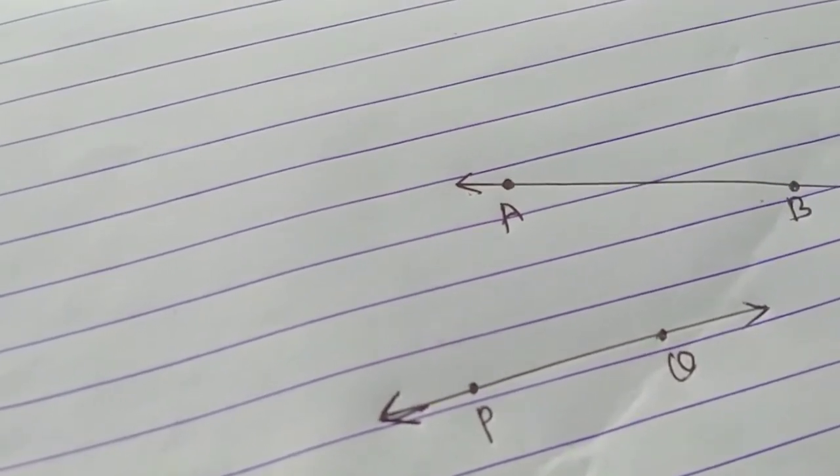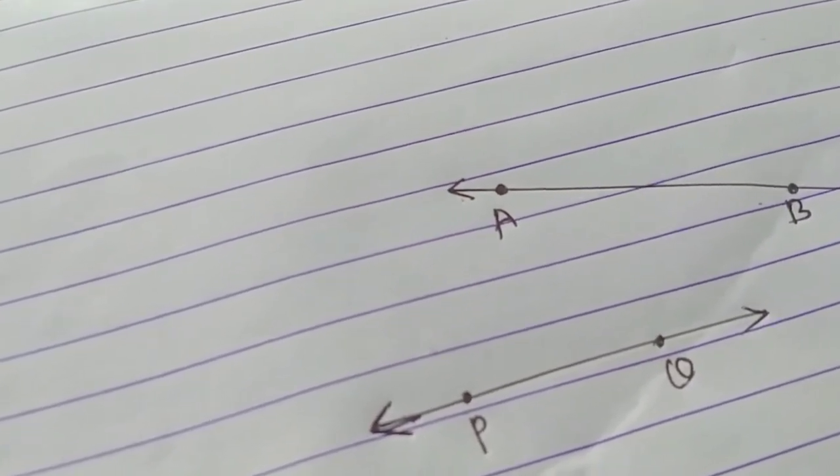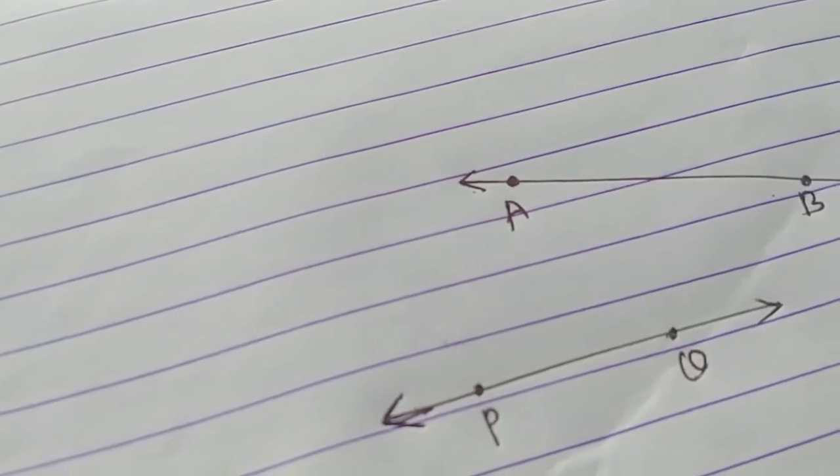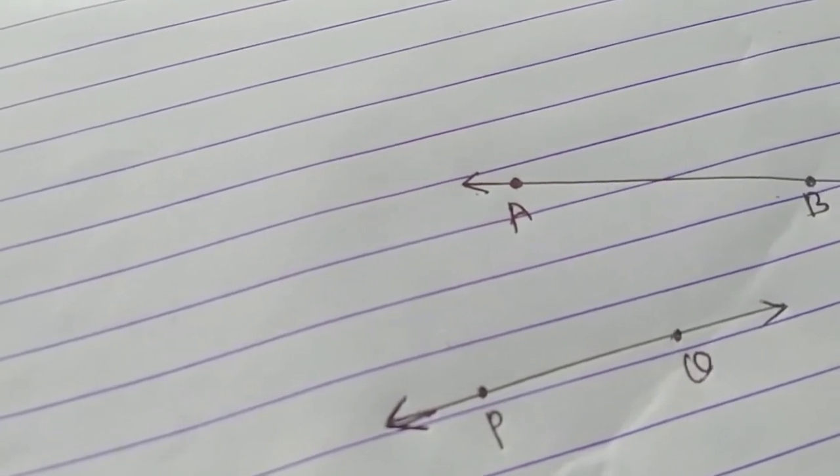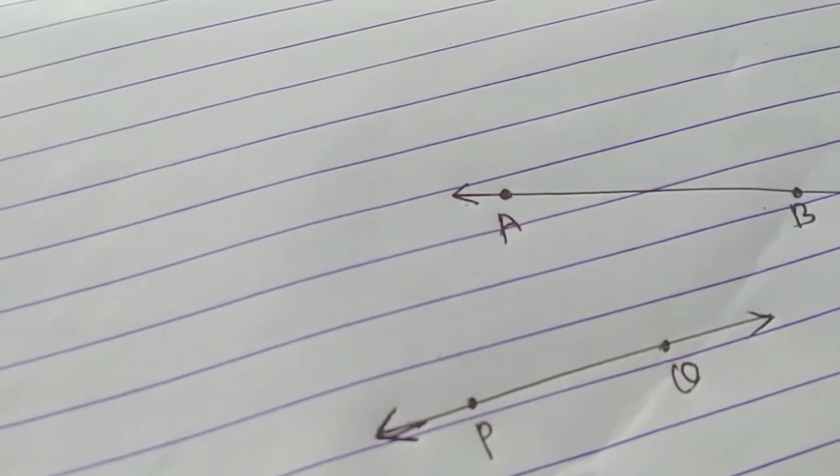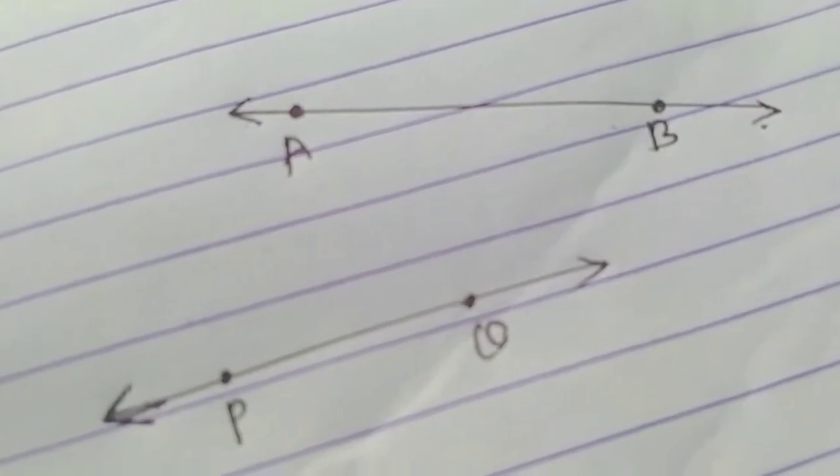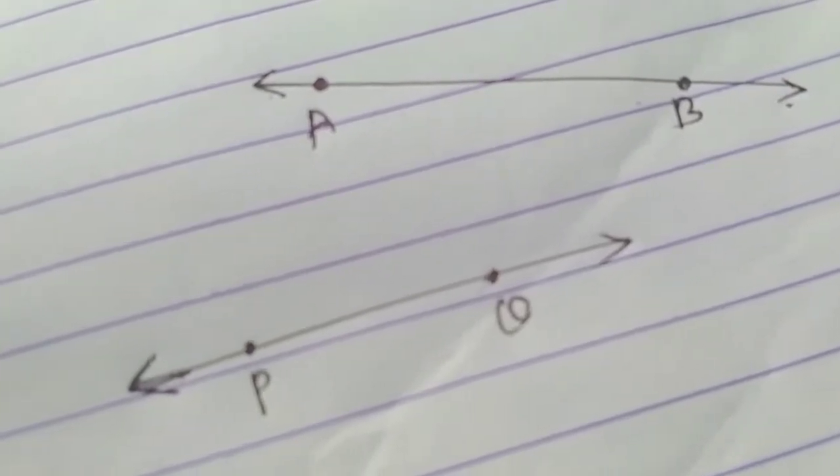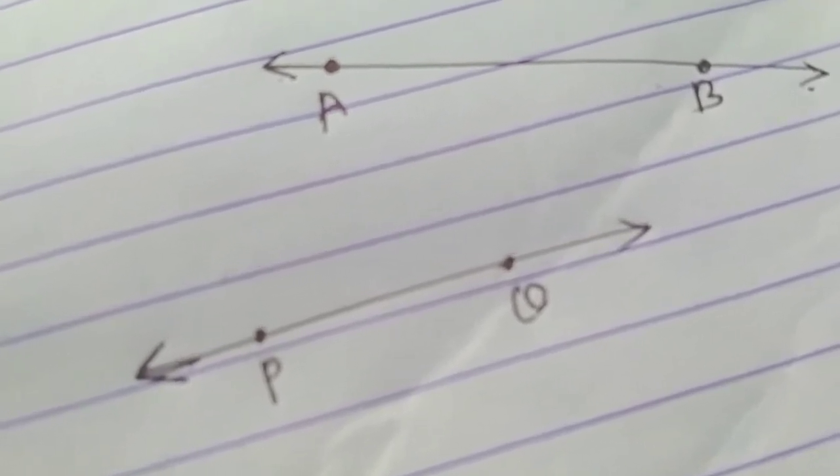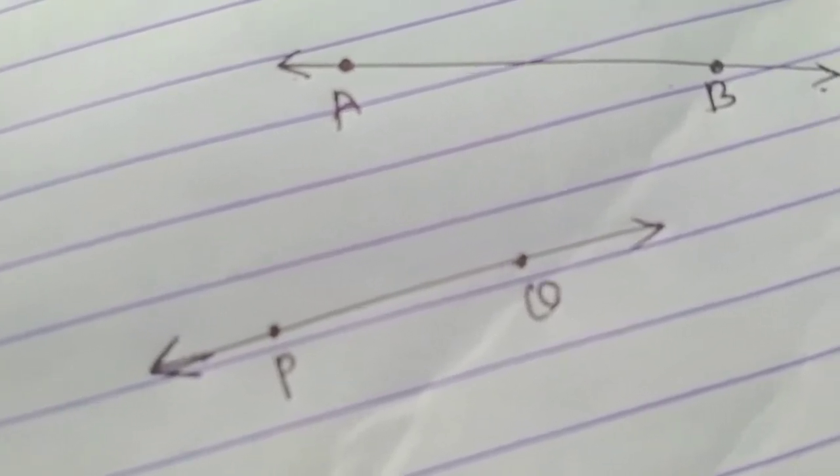The first line that we drew was only from point A to point B. It was a piece or a segment of the longer line. A line segment has two points showing its limits. They are called end points.